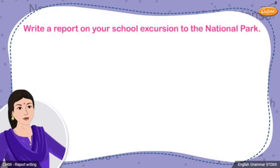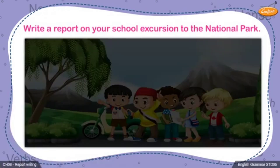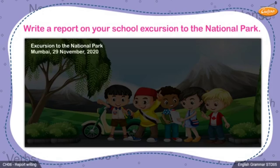You must first start with a catchy heading or title for the report. The title of this report could be 'Excursion to the National Park.' Next, you must write the place, date and month — for example: Mumbai, 29 November 2020. Now, you write the first paragraph. You must mention the date of the excursion, the name of the national park and where it is located. You can also write about when the students assembled in the school in this paragraph.